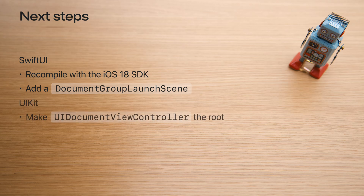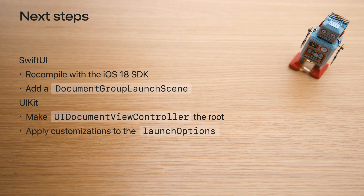For UIKit apps, make UIDocumentViewController the root view controller and apply your customizations to the launch options. Every application has something special about it. Emphasize your app's uniqueness and make it recognizable on first sight by adopting the new API. Thanks for watching this video and tell your app's story through the document launch experience.